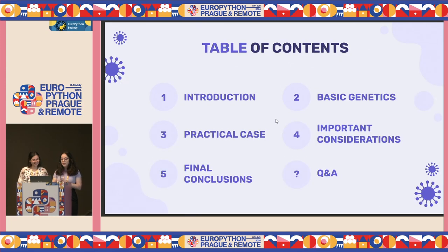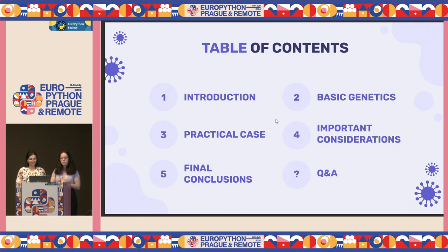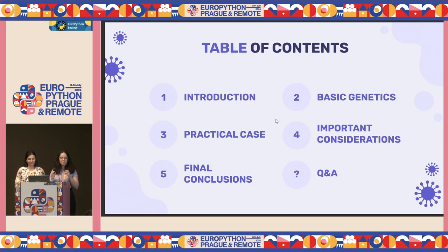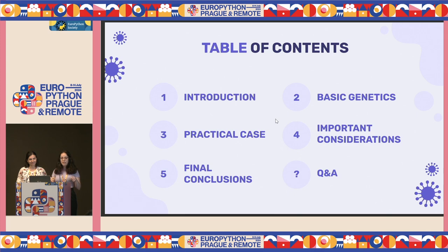We are going through all these sections. First, we will start with a little bit of introduction concepts regarding synthetic biology and viruses. Then we will go through very basic genetics — I promise it's a very quick genetics class, so please don't be afraid. Just the basics to understand the practical case, where we will create, with the help of Python, a synthetic virus to destroy the world and humanity in general. Then some important considerations, final conclusions, and a Q&A round.